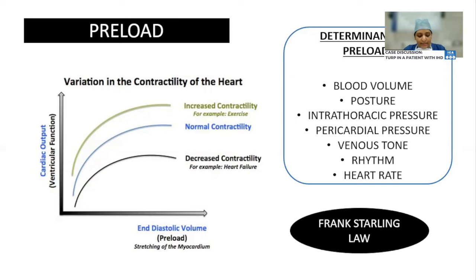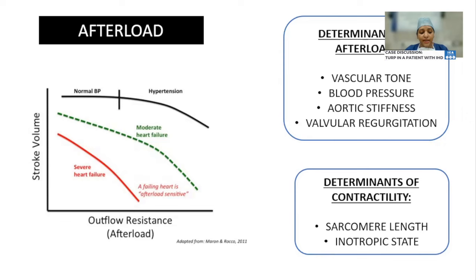Frank-Starling law states that the initial length of the muscle fiber — here the cardiomyocytes — is directly proportional to the force of contractility, but only within physiological limits. Afterload is the resistance or pressure against which the left ventricle must pump, and it roughly correlates with aortic systolic pressure. Contractility is the ability of the myocardium to pump blood into the systemic circulation. Determinants of afterload include vascular tone, blood pressure, stiffness of the aorta, and aortic valvular regurgitation. Any increase in afterload reduces stroke volume and hence cardiac output.